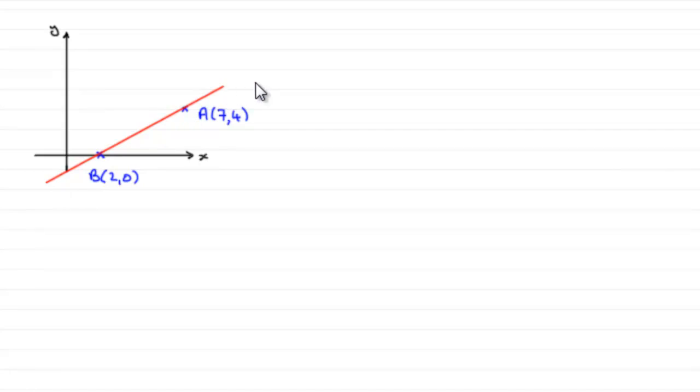Well, I know that a line has the form Y equals MX plus C but I don't want to use that. It slows us down. No, the version that I'm going to use is this one: Y minus Y1 equals M bracket X minus X1, where M is the gradient of the line and X1, Y1 is a point on the line.